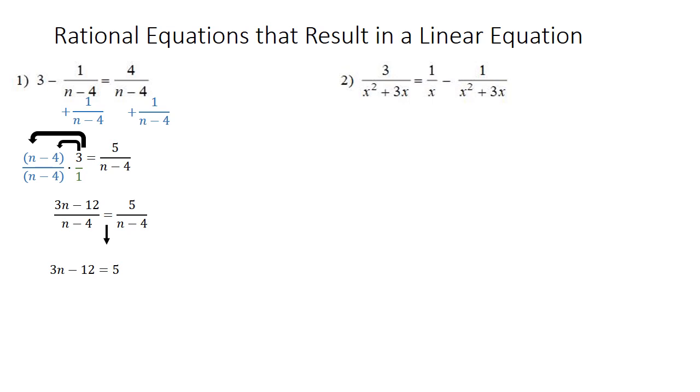This is just a linear equation that we solve by getting n by itself. So first we're going to add 12 on both sides. So we get 3n equals 17. Then we divide both sides by 3. So we get that n equals 17 over 3.